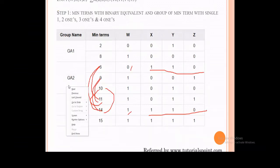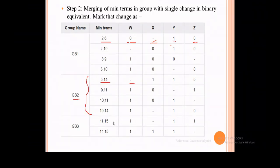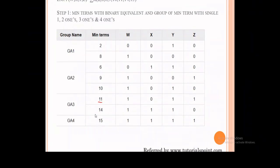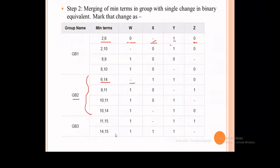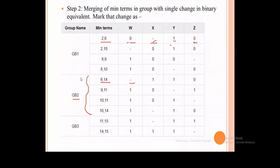From the third group, compare 11 and 14 — they differ in only one bit, so they can be combined. Then compare 14 and 15 from groups GA3 and GA4: three bits are the same, only the last bit is different. So 14 and 15 are written together. This is step two — we reduced the four GA groups down to three GB groups.